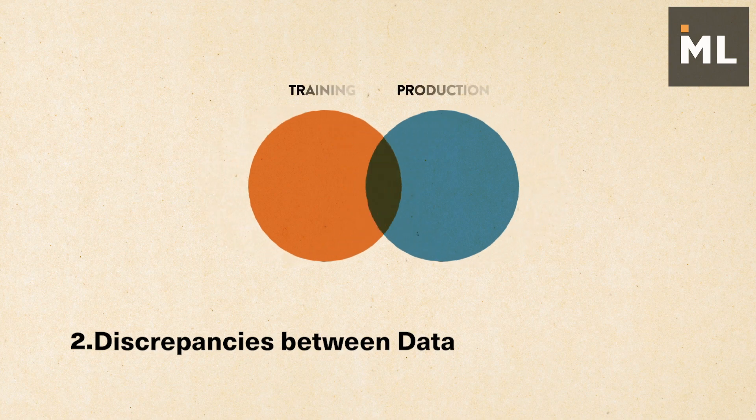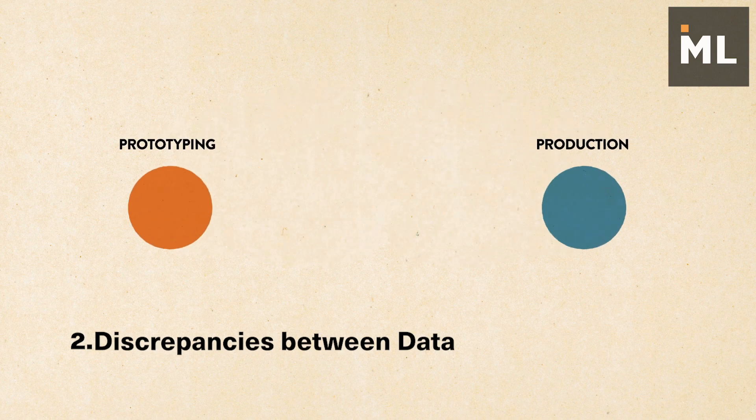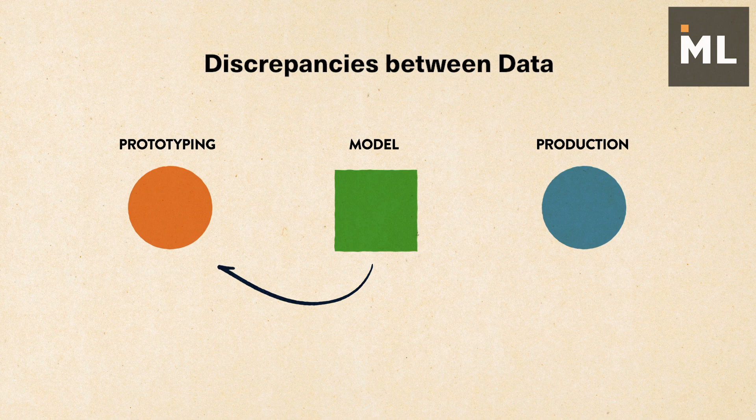The second challenge is that there are usually discrepancies between training data and production data. Sometimes the model works well in your prototyping environment but fails to generalize in real-world cases.